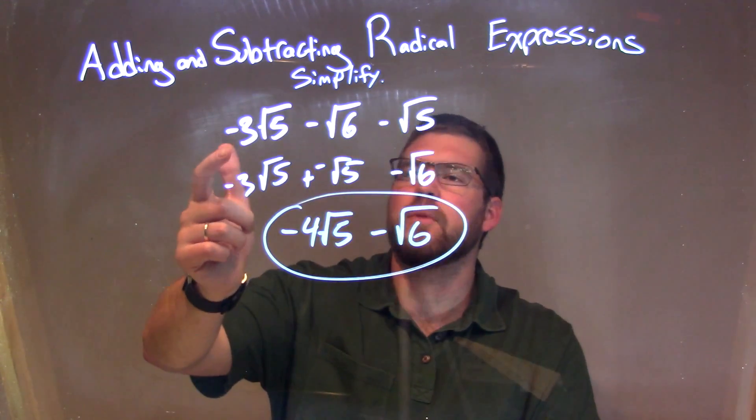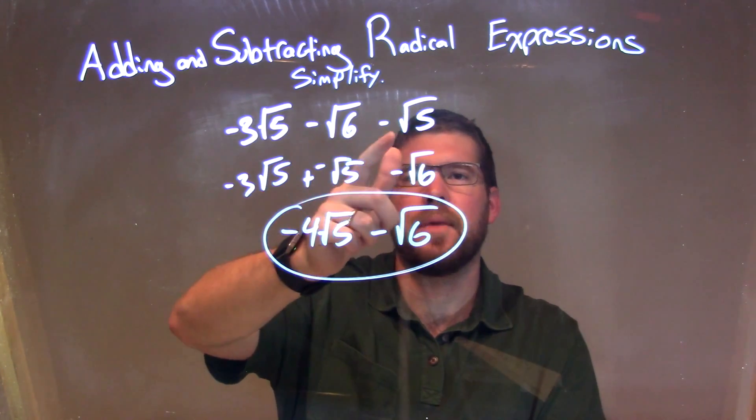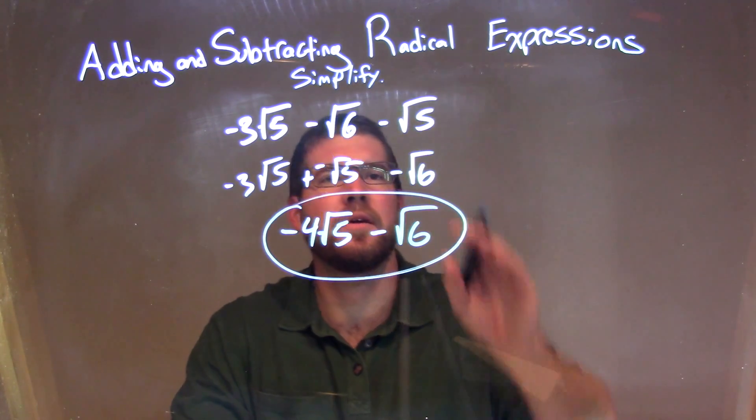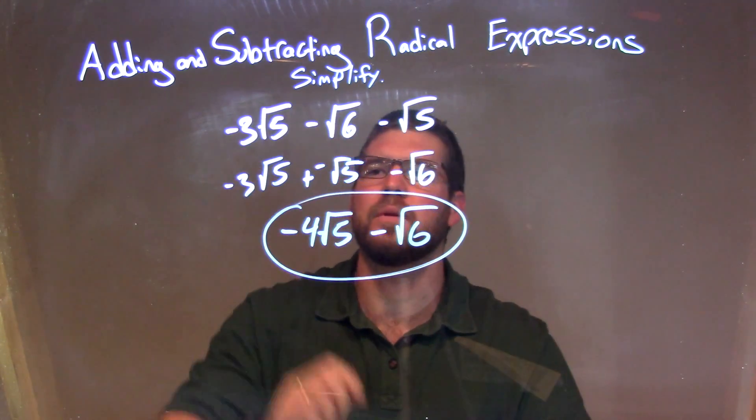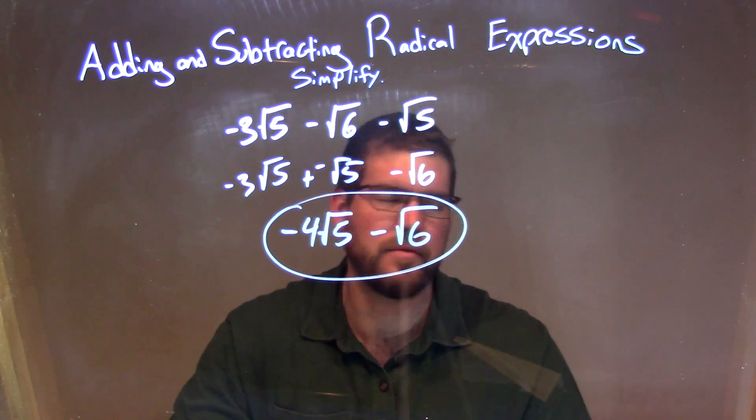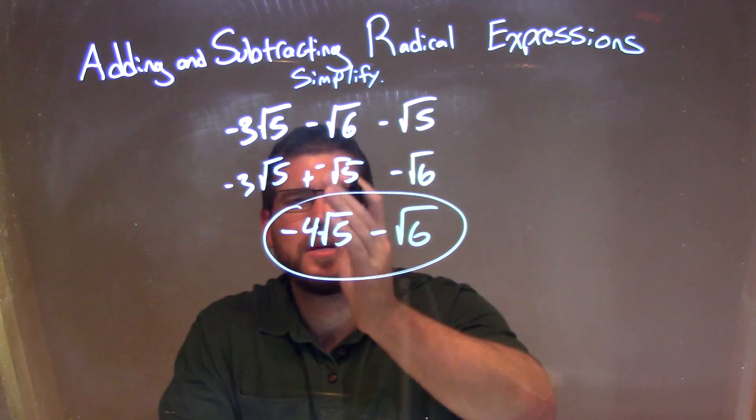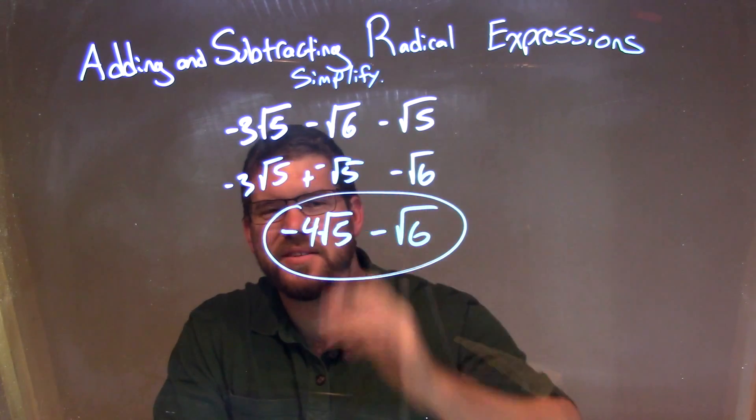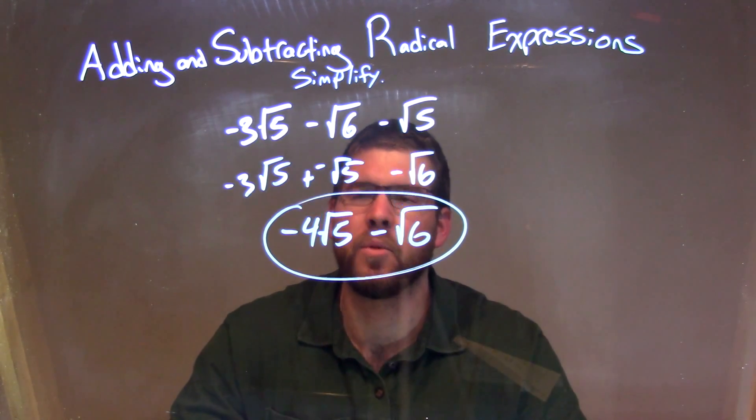So let's recap. We're given negative 3 square root of 5 minus the square root of 6 minus the square root of 5. If you can do it from here, you can see the minus square root of 5 and the negative 3 square root of 5, and combine them to get that minus 4 square root of 5. But I kind of rearranged it here to help maybe bring it together so you can see it. It's really up to you and how comfortable you are with the problem right here.